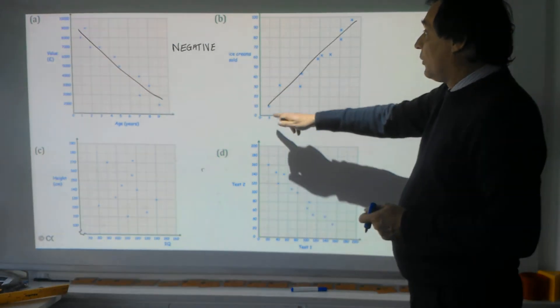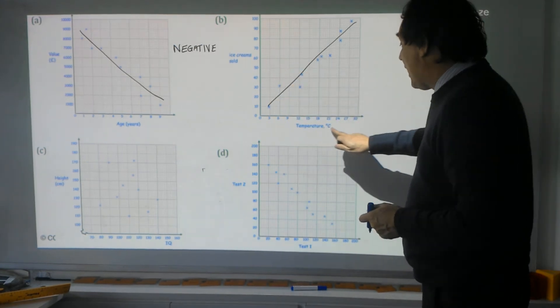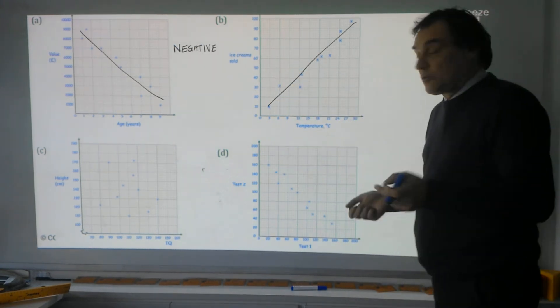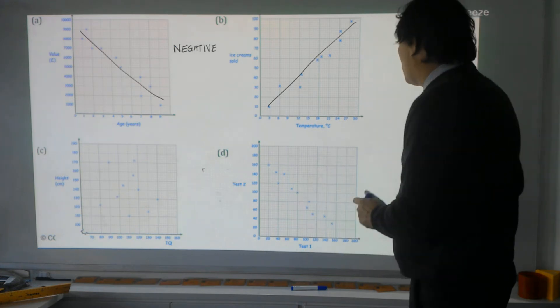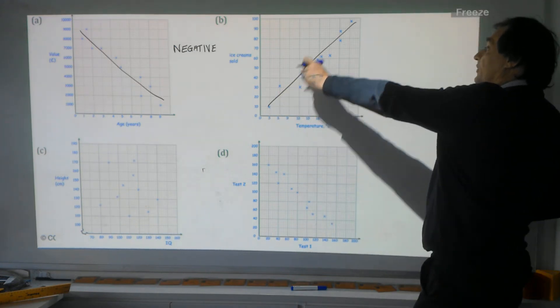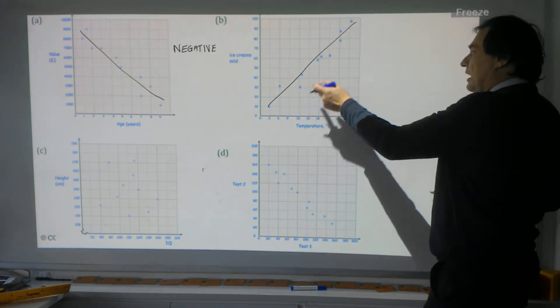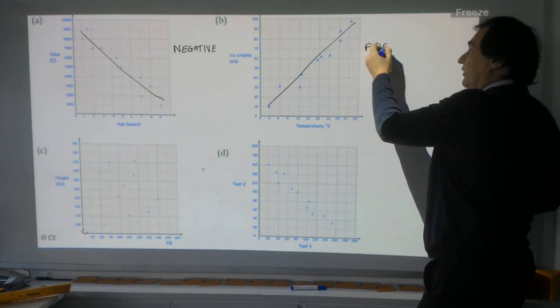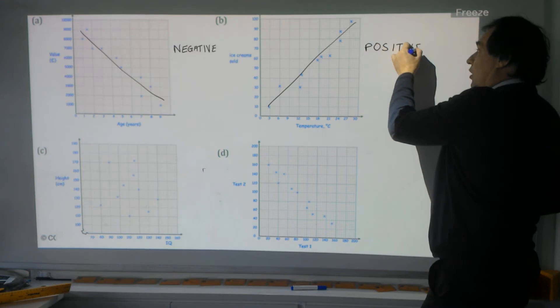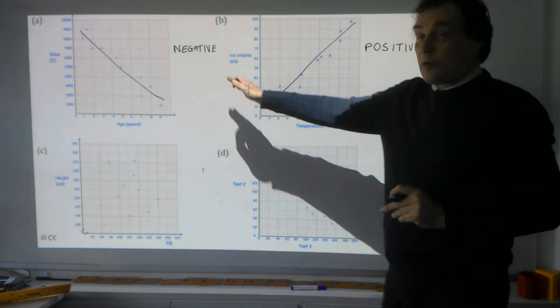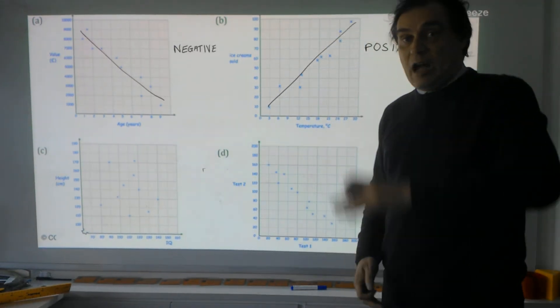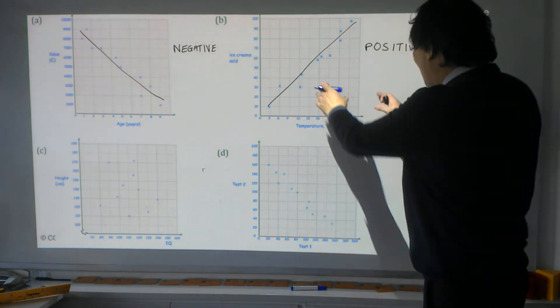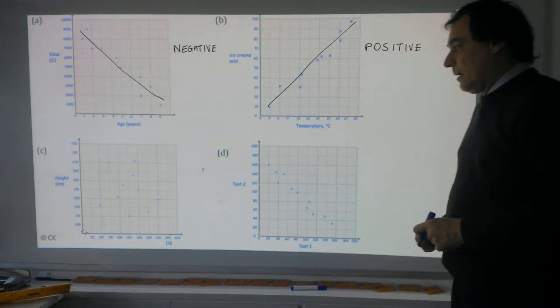Ice creams sold go up as the temperature goes up, which is what you'd think really—on hotter days you'll sell more ice creams. As the line is going upwards, we call that positive correlation. So we've got negative correlation where one thing goes up and the other goes down, and positive where both things go up at the same time.